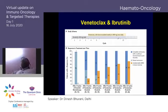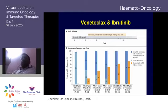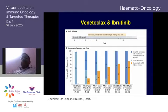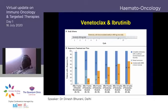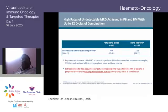Even in western countries, lifelong therapy is not fully accepted, so there are strong efforts to develop time-limited therapies. Venetoclax plus obinutuzumab, tried in elderly patients, may also be explored in younger patients. There is also interest in combining both ibrutinib and venetoclax to achieve higher MRD negativity with a limited treatment duration.